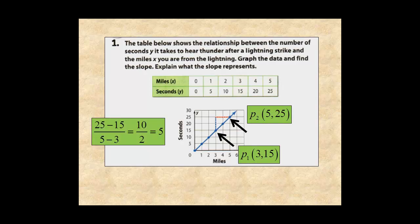The slope is the same as the rate of change in the relationship between seconds and miles, which is how fast thunder travels after a lightning strike, 5 miles per second.